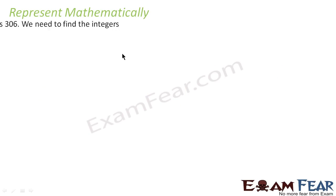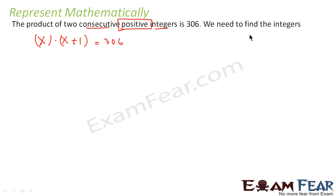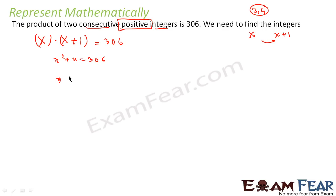Some more examples where we have to represent real life scenarios mathematically. The product of two positive consecutive integers — if the first integer is x, the second will be x plus 1. The product of these two consecutive integers is 306, so x into x plus 1 equals 306. That is x squared plus x equals 306, or x squared plus x minus 306 equals 0.